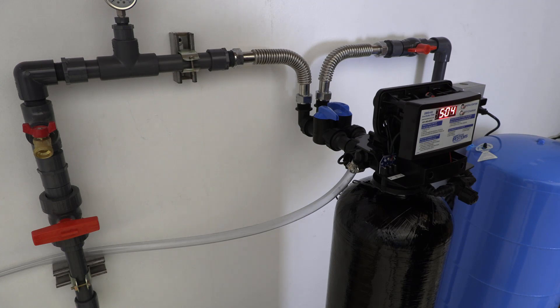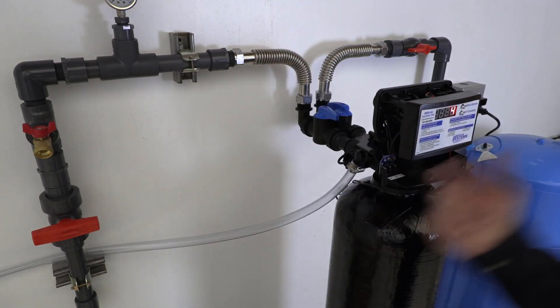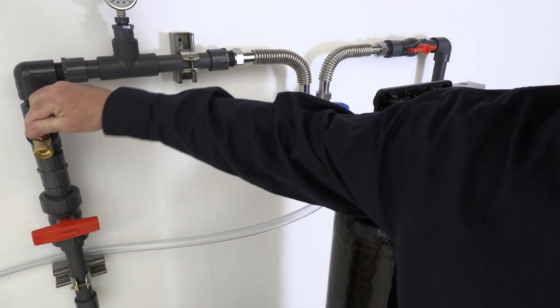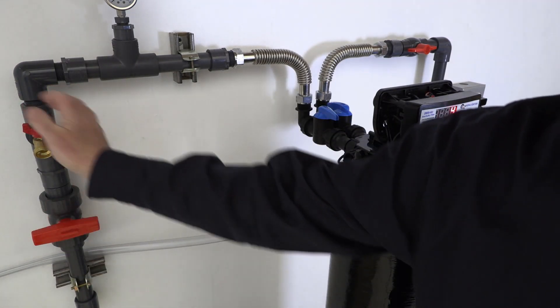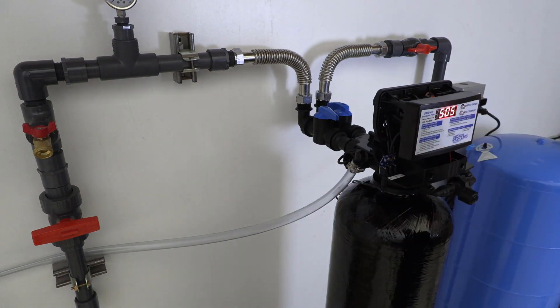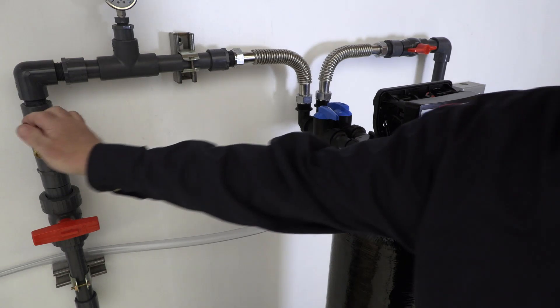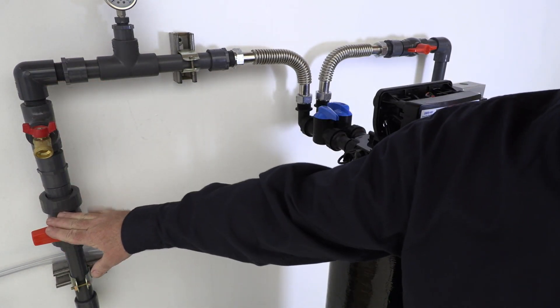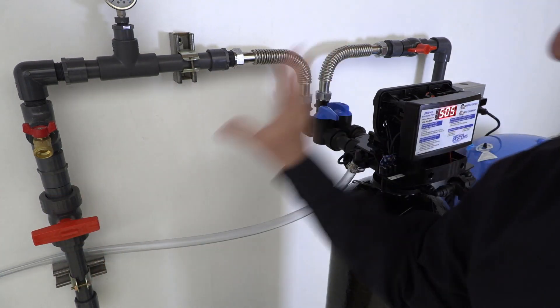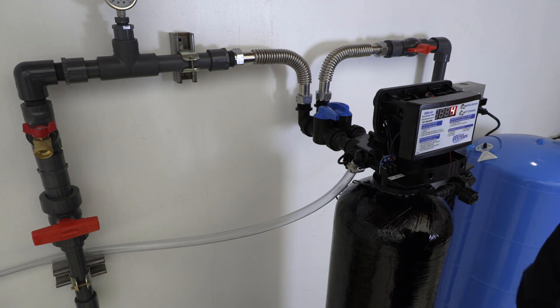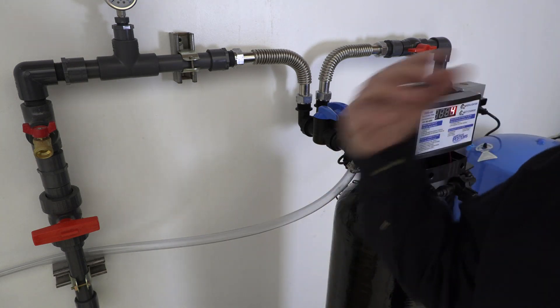Again, once you go through your backwash and rapid rinse, go ahead and sample here again. Take a look, see the clarity of the water. You just want to keep repeating that several times until you see some clear water coming through here in your service position. Again, you still want to keep the house isolated. And if you had any other appliances here—water softeners, additional filters, UV units, reverse osmosis, anything like that—you want to have those isolated until you're seeing this clear water come through here.